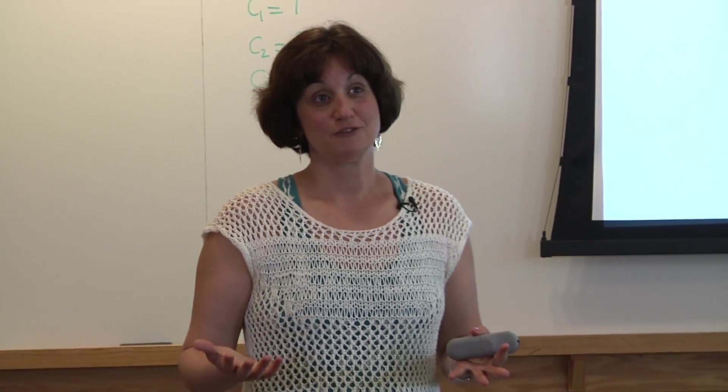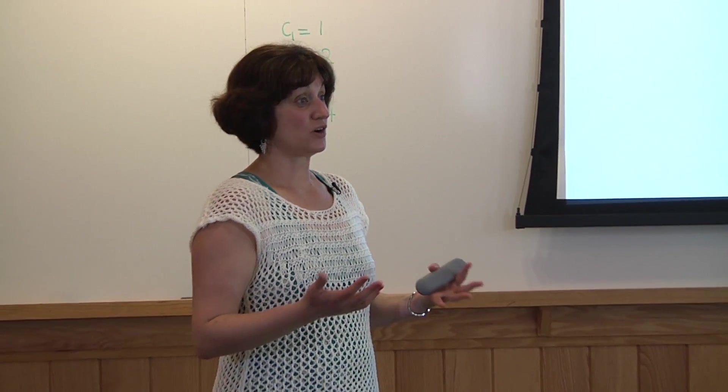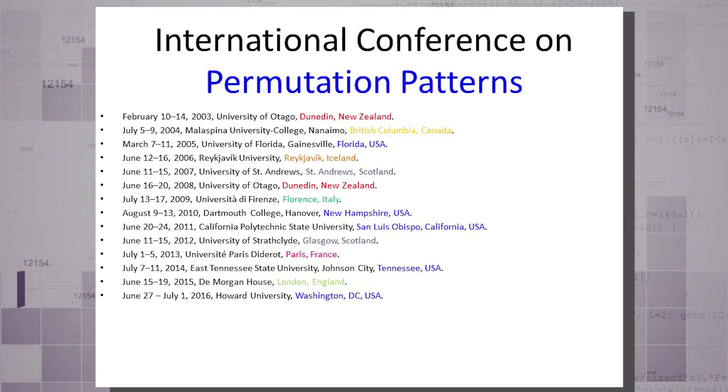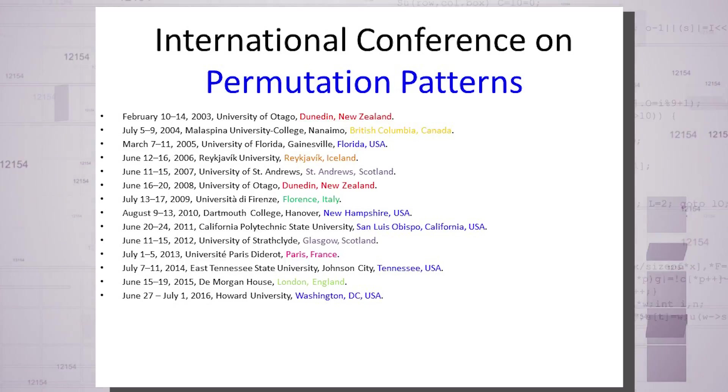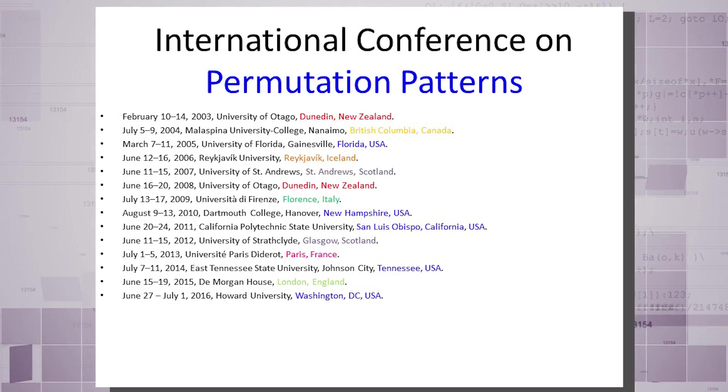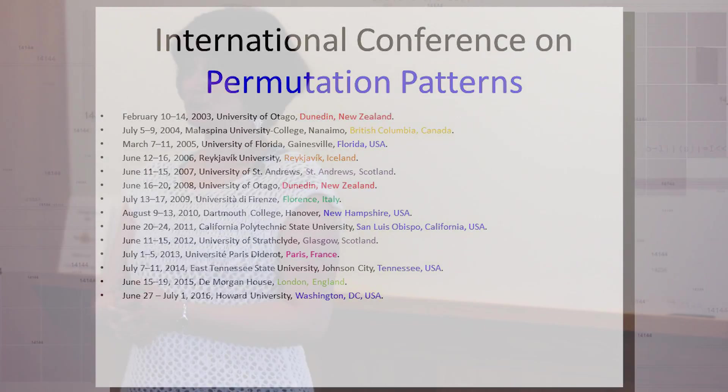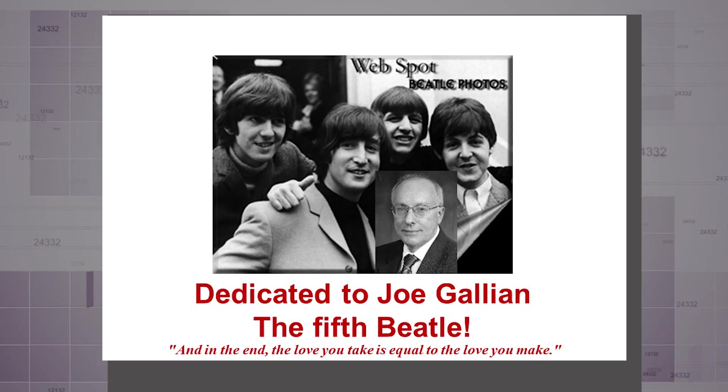So from an obscure topic from the early 1990s, where only a few people knew about restricted patterns, where the library had only one reference to the Julian West thesis, this area of mathematics has grown so large that there are, every year, international conferences on permutation patterns. Over the years, they have changed countries, including US, in many of those years. So if you are really excited about this topic, you want to learn the real truth and all of the open questions, and there are many more out there than I managed to tell you. Please check the schedule and attend the conference. I dedicate this talk to Joe Gallion, the fifth beetle. Thank you very much.